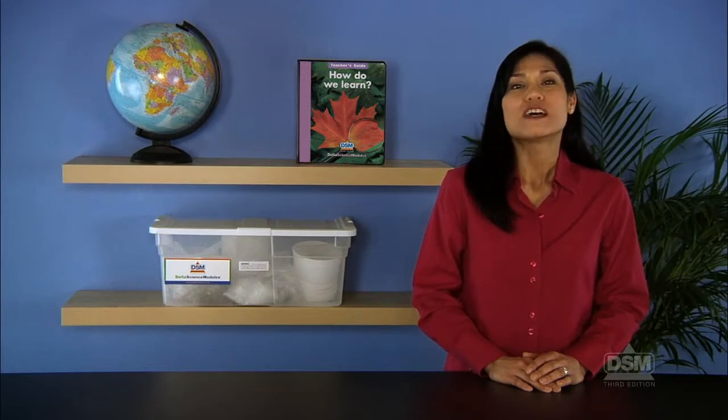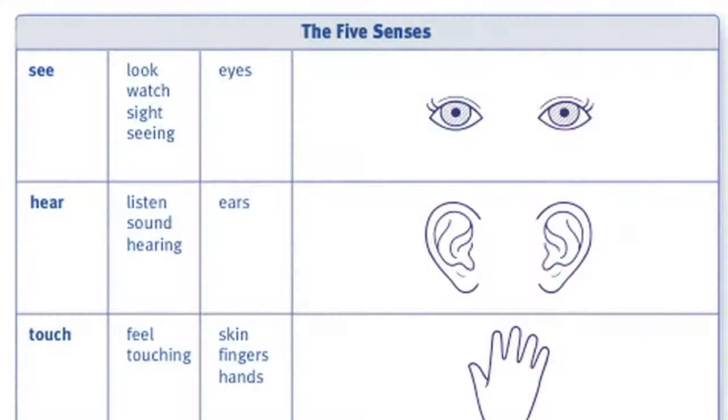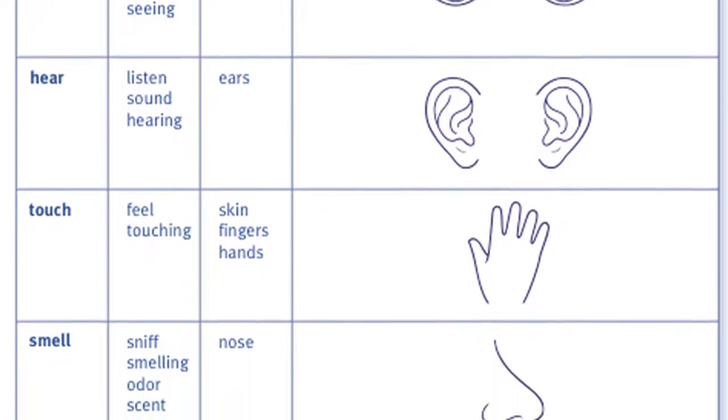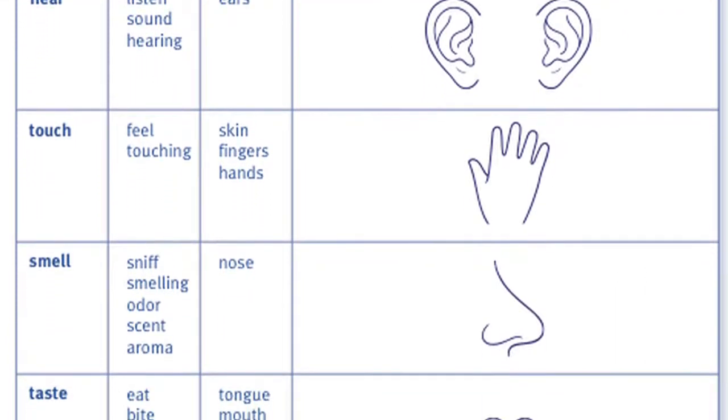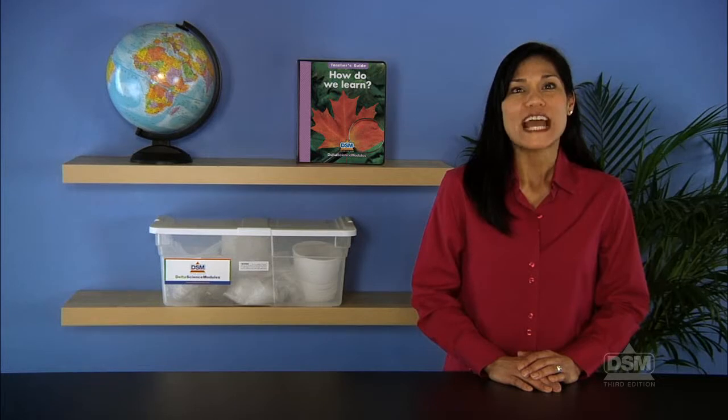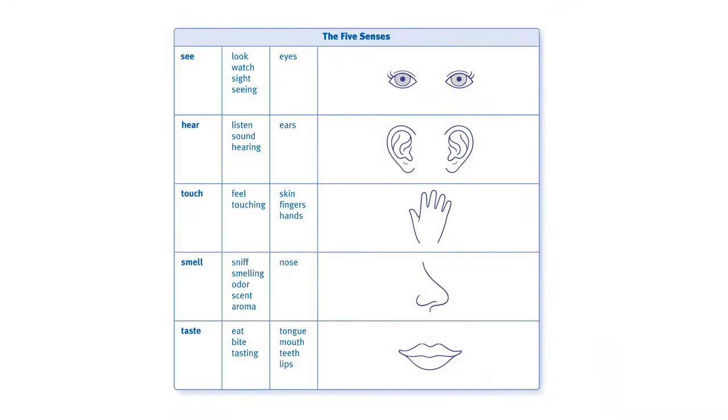To track the students' sensory experiences, begin a five senses experience chart and review the words see, hear, and touch, writing these words on the chart. Students may also use words such as sight, sound, listen, and feel to describe the senses. As students describe how they would observe and explore objects with these senses, note key words and add them to the chart in the appropriate categories.